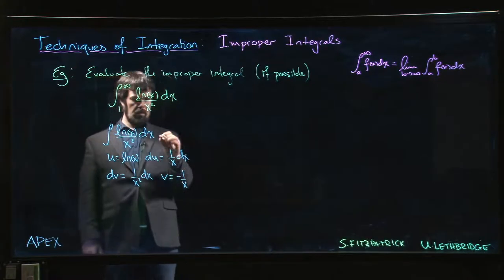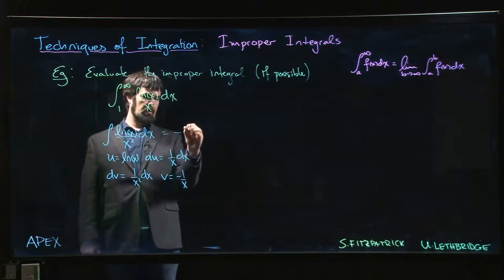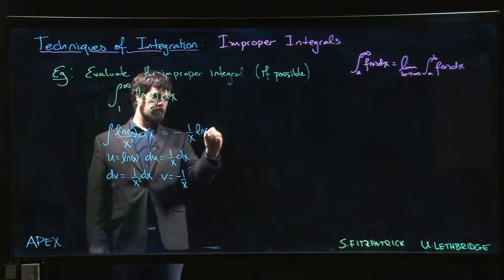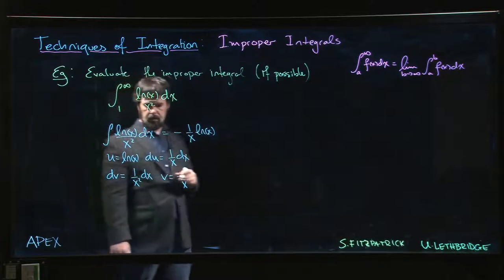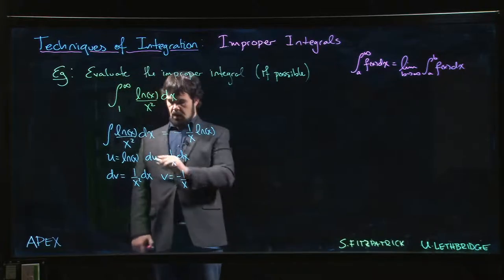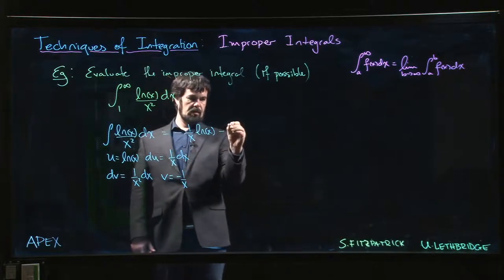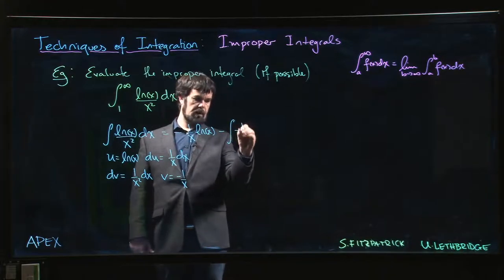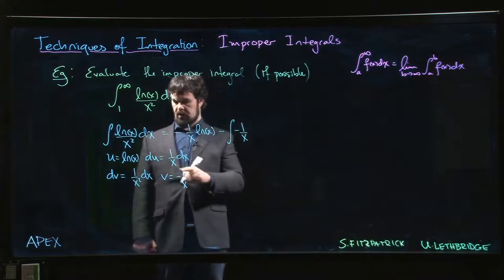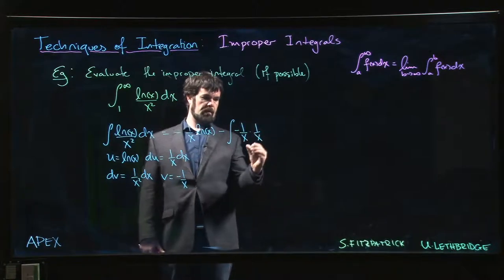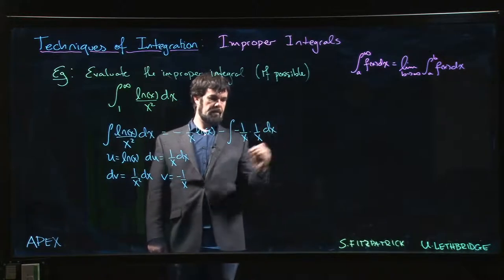So we get minus 1 over x log x minus the integral of v, so minus 1 over x times du, 1 over x dx.